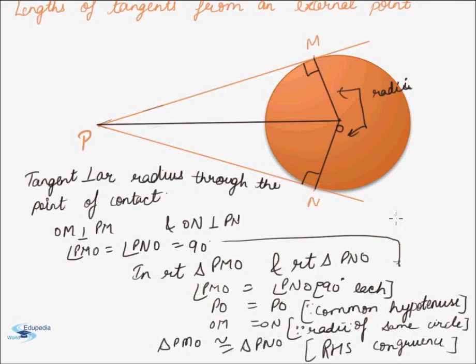Now, since the triangles are congruent, their corresponding sides will be equal. Thus, by CPCT, the corresponding sides, that is, PM will be equal to PN.